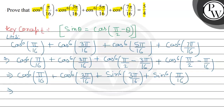So here we will use the identity: a³ plus b³ equals (a plus b)³ minus 3ab(a plus b). I will use this identity.